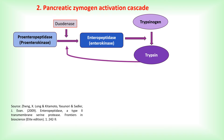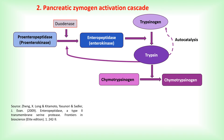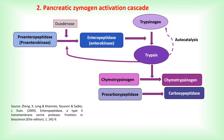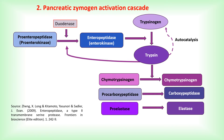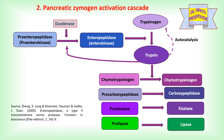Enteropeptidase cleaves trypsinogen to generate active trypsin. This active trypsin acts again on trypsinogen to produce more active trypsin — a process called autocatalysis. Active trypsin in turn activates other digestive enzyme precursors: chymotrypsinogen to chymotrypsin, procarboxypeptidase to carboxypeptidase, proelastase to elastase, and prolipase to lipase.